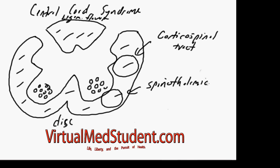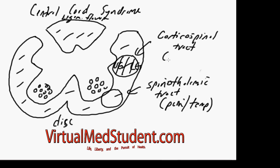The corticospinal tract is a motor movement tract that sends motor information down towards various areas of the body. It's organized such that towards the middle of the cervical cord are motor fibers going to the upper extremities, and as you move out towards the lateral portion of the cord, you reach the lower extremity fibers.